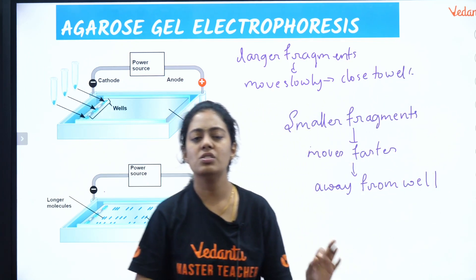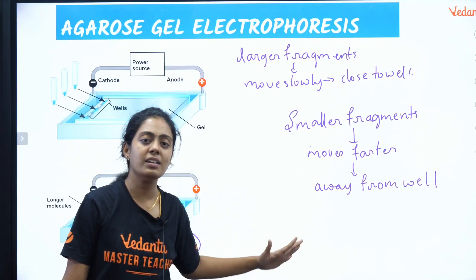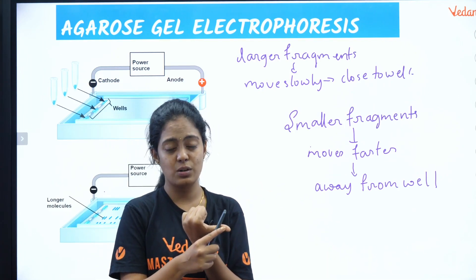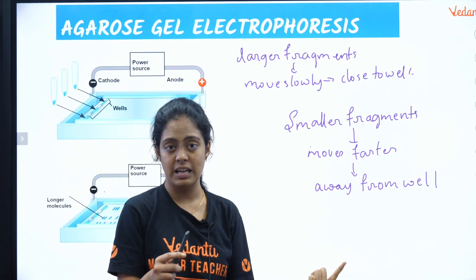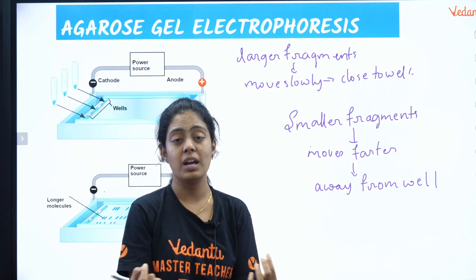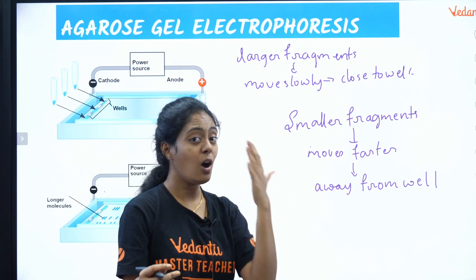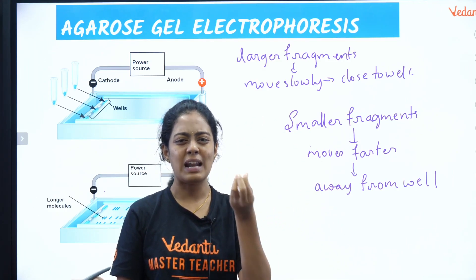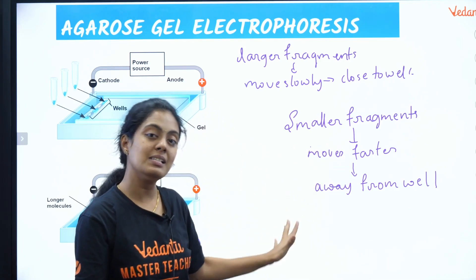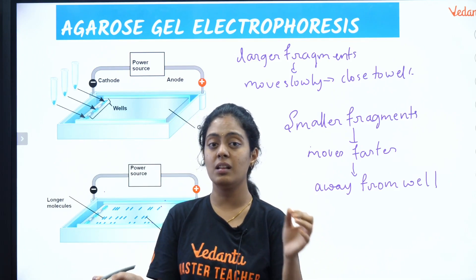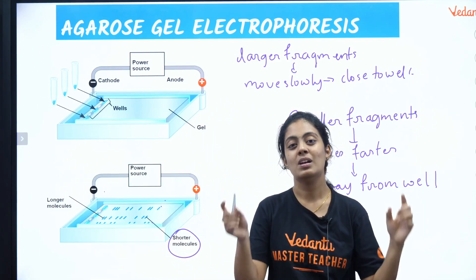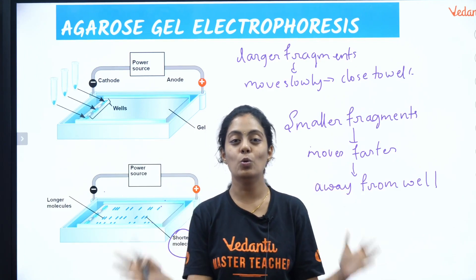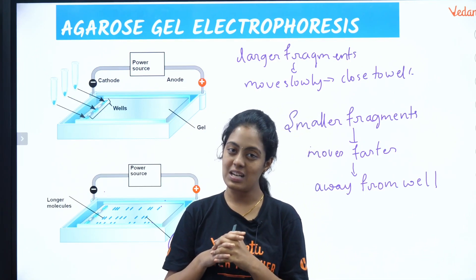That is all the full information on agarose gel electrophoresis. If you know this, you can answer any question. Key things to remember: the stain used is ETBR, smaller vs. larger fragment behavior, what the gel is made of, how molecules are separated, and how DNA is visualized using UV illuminator. Thanks for learning with Niveta — do stay tuned!